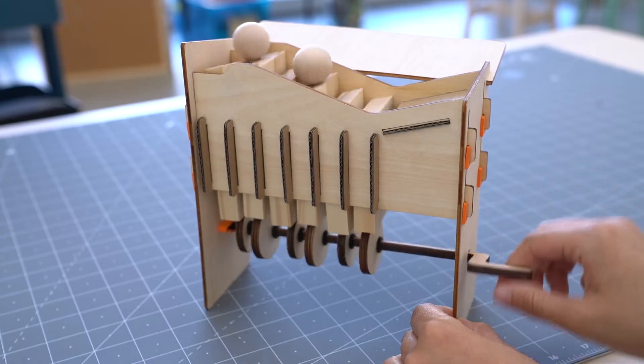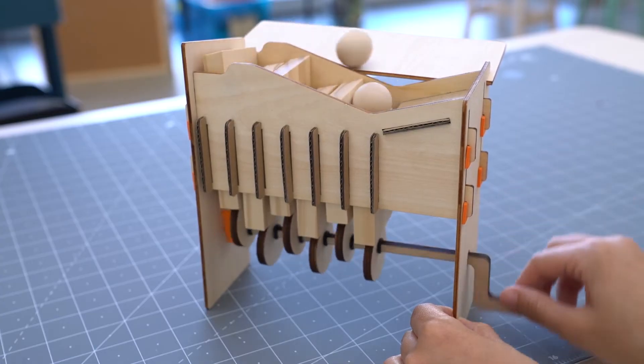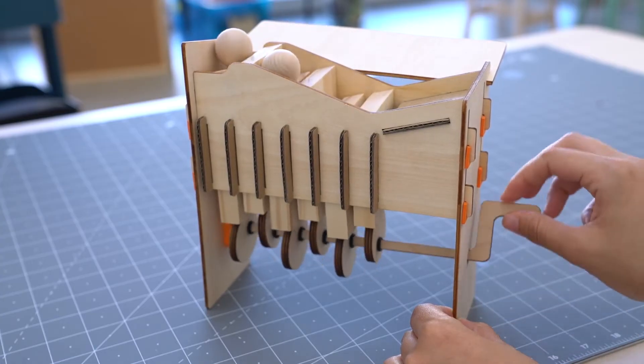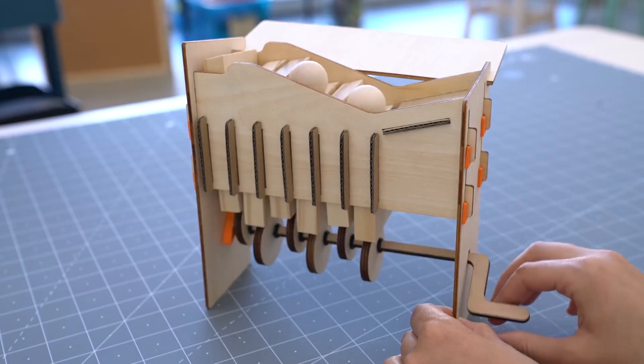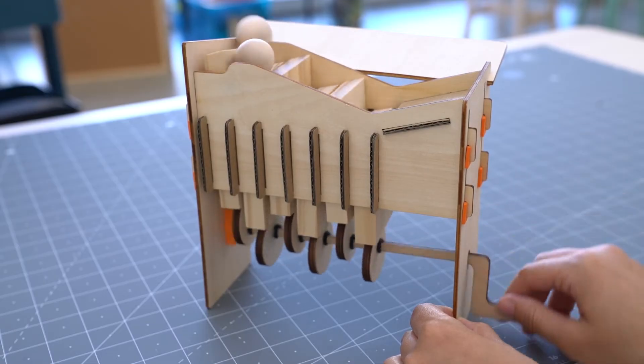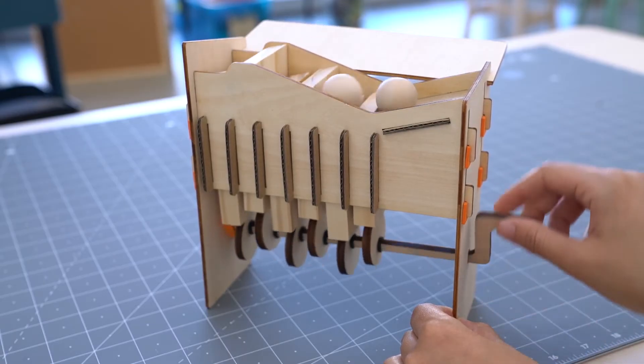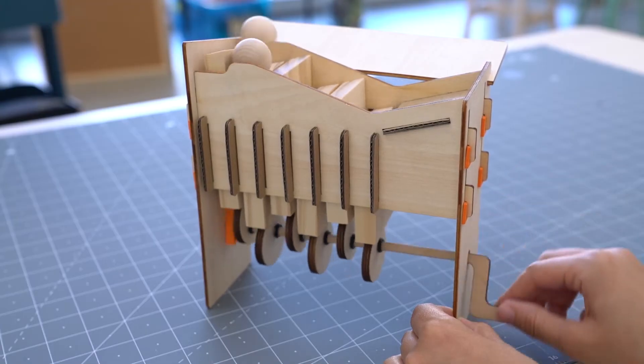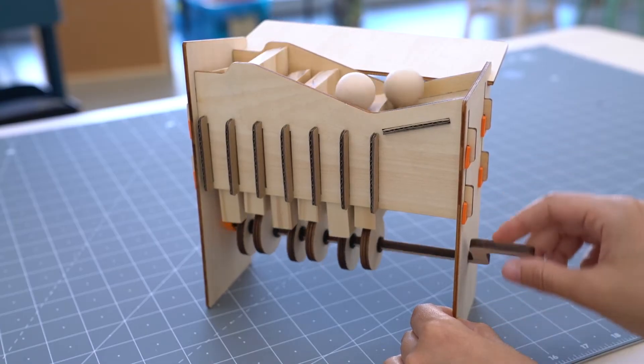Because the cams aren't lined up, each stair goes up and down at a different time. When one stair goes up, the one next to it goes down. As that process repeats, the stairs lift the ball all the way to the top. Then the ball rolls down the ramp to the bottom of the stairs, and it starts all over again.